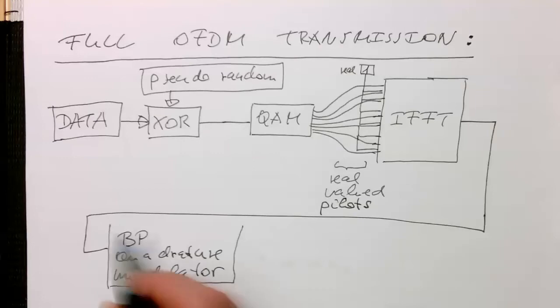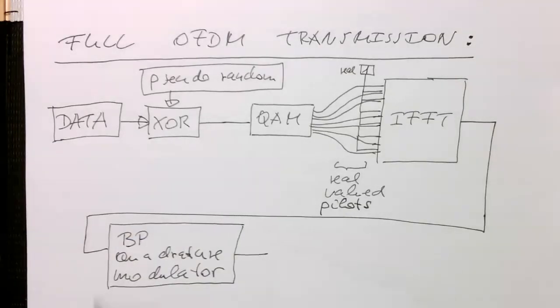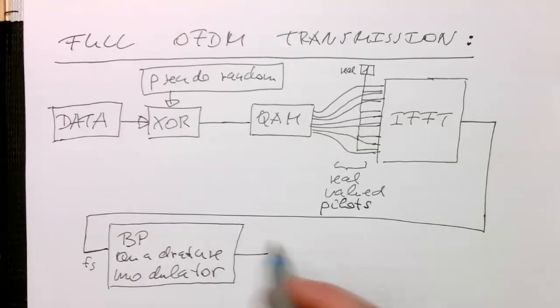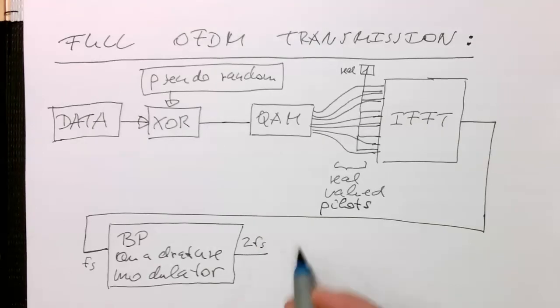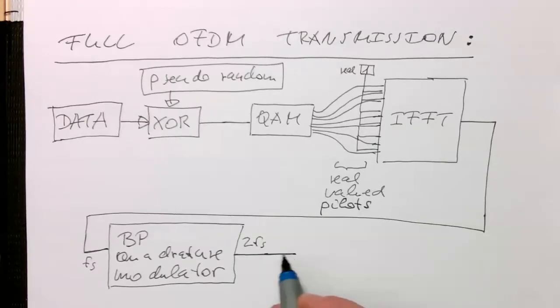Remember, this is running here at the critical frequency. If this is here FS, then this is running here at 2FS at the output, because we're interleaving the complex values. At this stage here, we add the cyclic prefix.